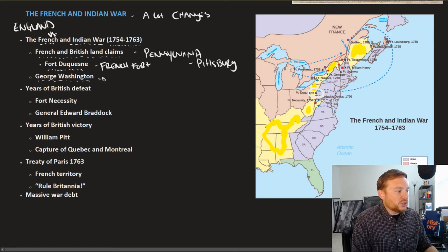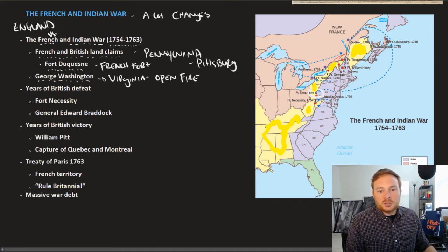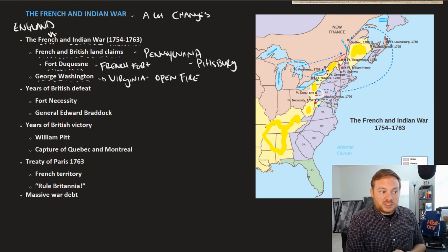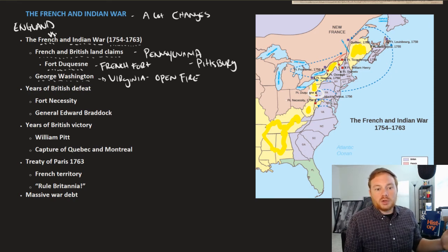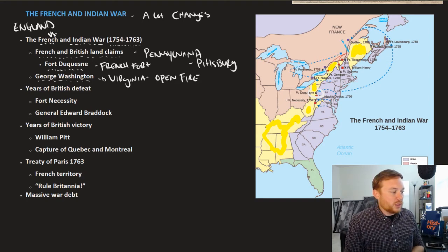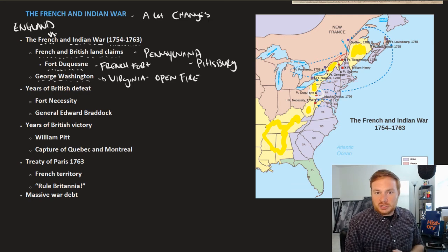George Washington, who was working for Virginia, took a militia out there and opened fire on French forces. This was the opening skirmish of the war. Washington at the time was relatively unknown — he was a land surveyor — and had been ordered by the colony of Virginia to go out and stake a claim for Great Britain. When his men opened fire on the French, it started the whole conflict known as the Seven Years' War.